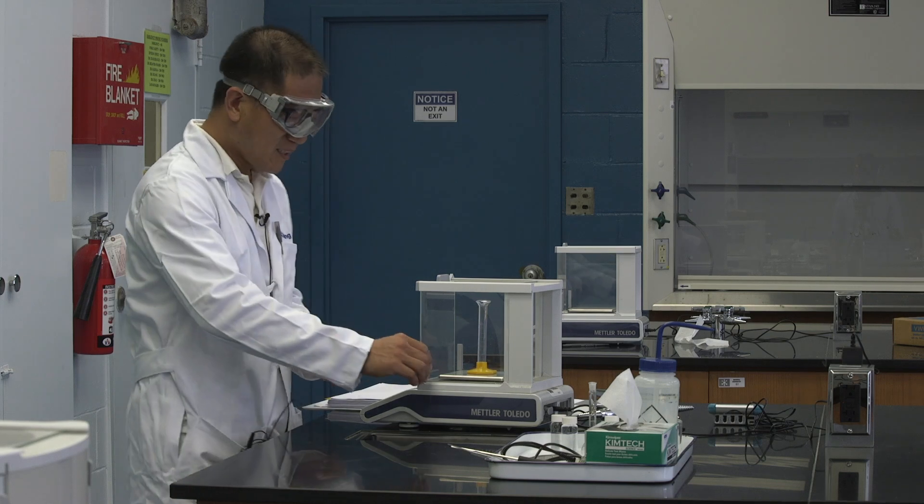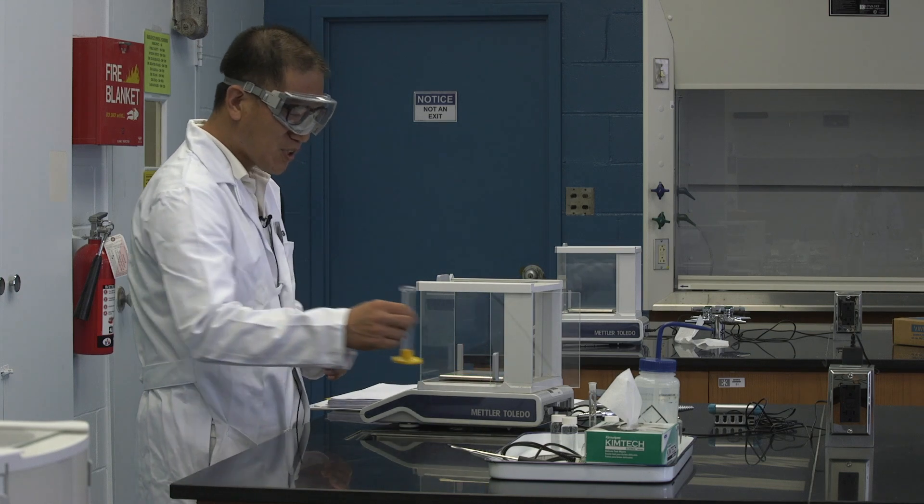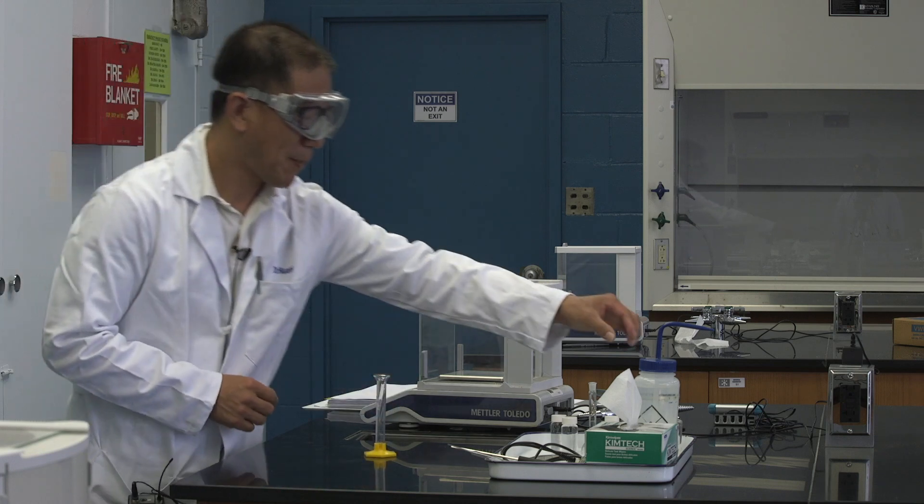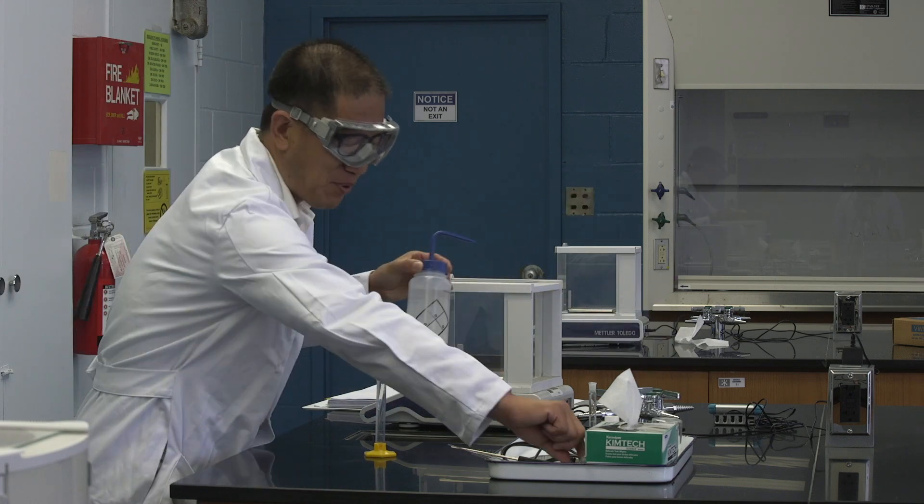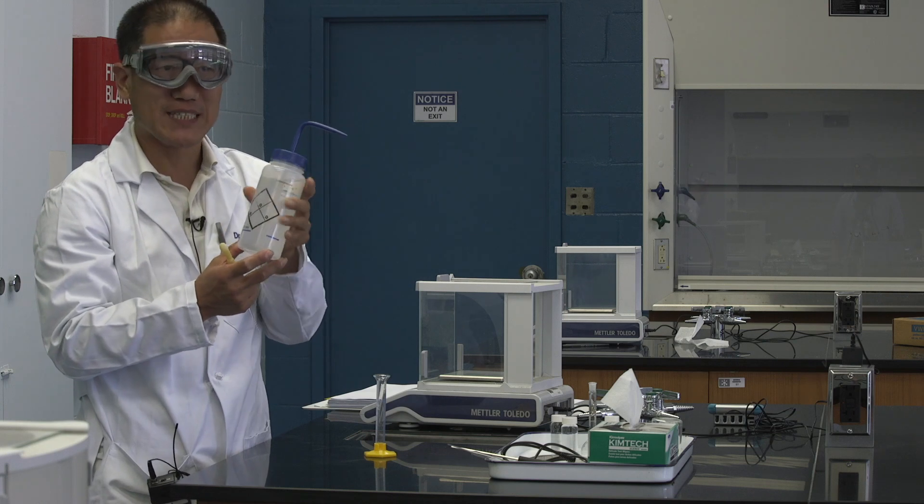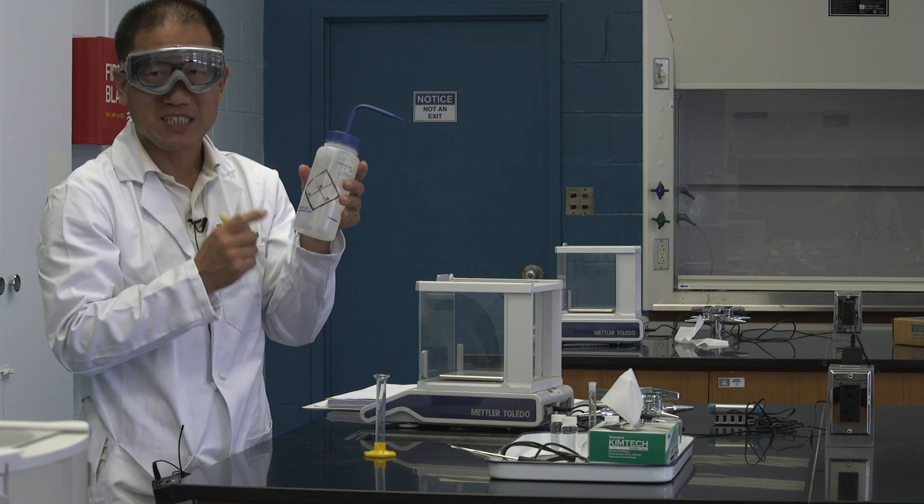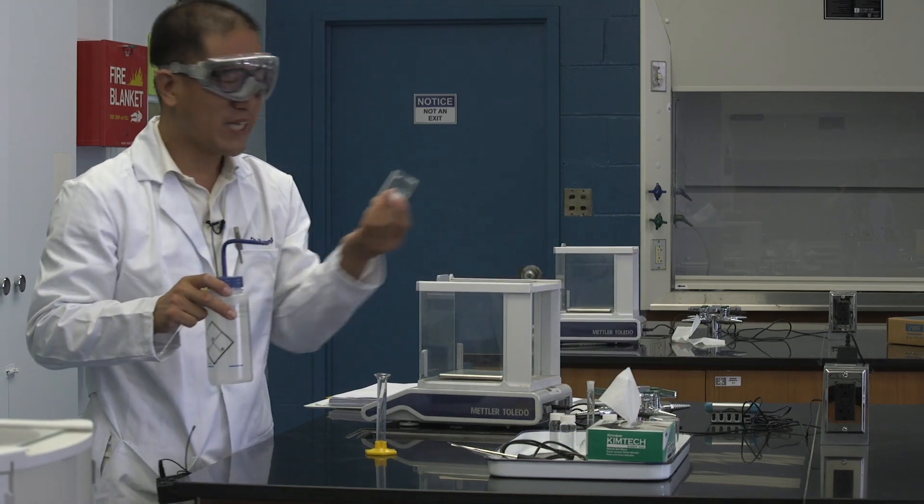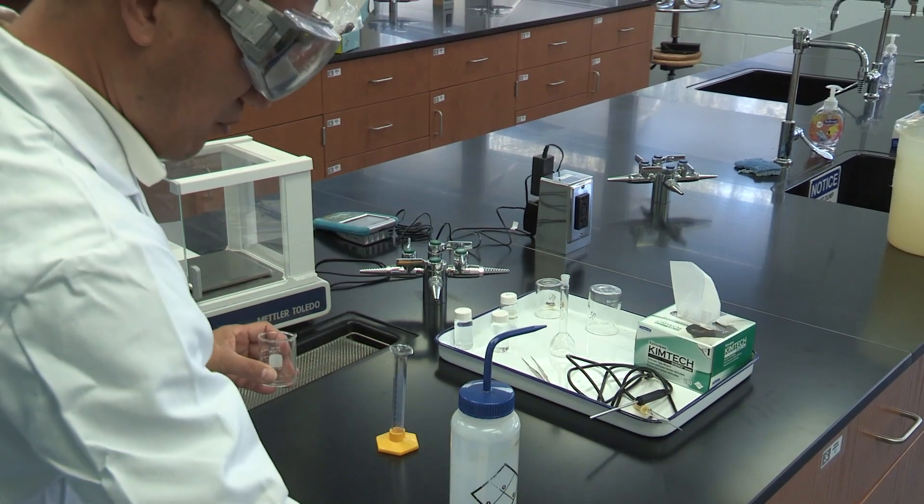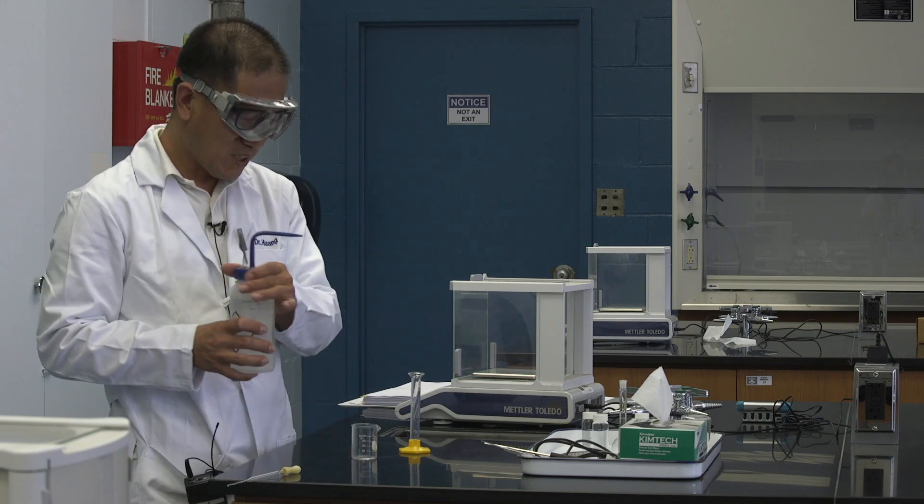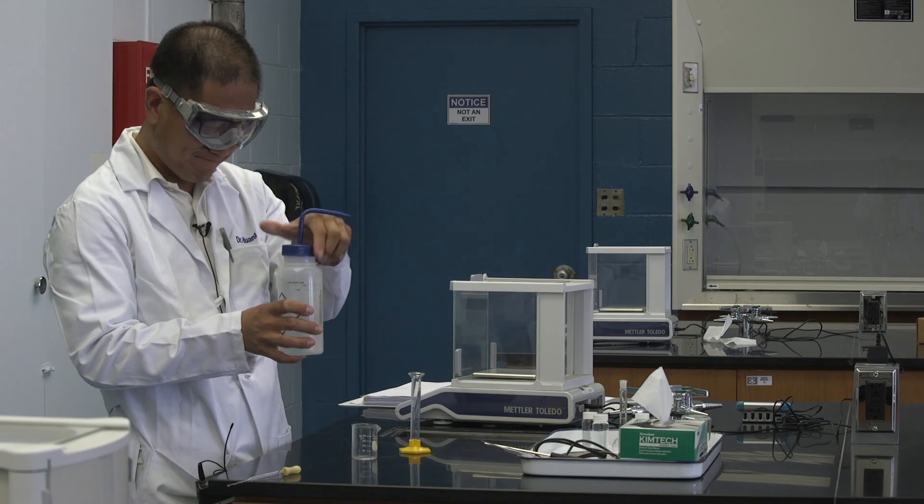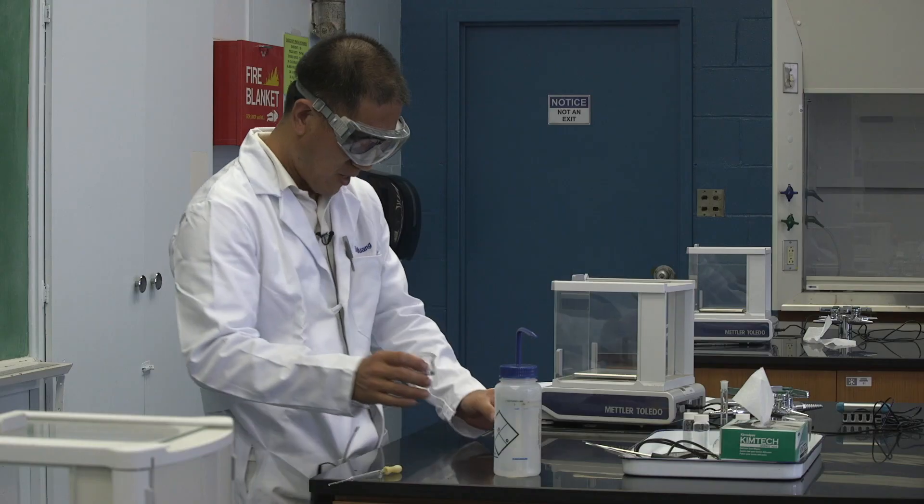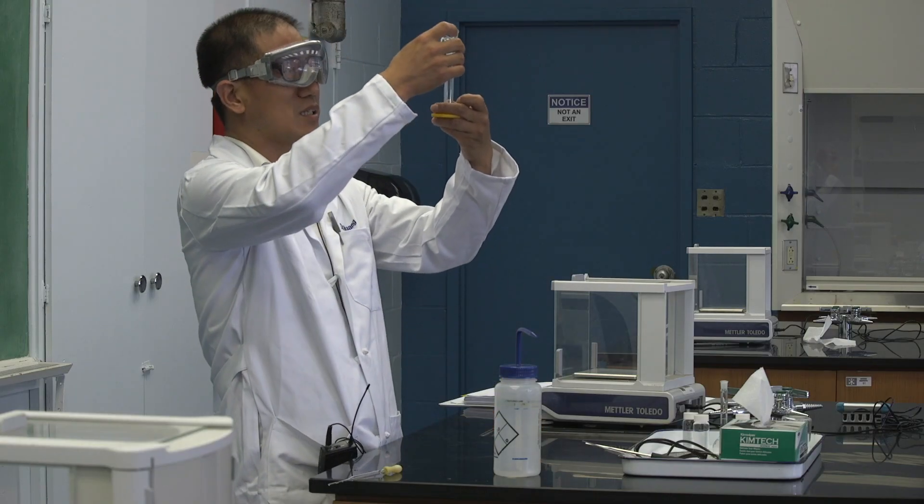Let's take out the graduated cylinder, and we add water to the 2 milliliter mark. We don't want to use the dropper to get water directly from the wash bottle, because if this is dirty, it will contaminate the whole bottle. So we get a beaker. Let's get some water from the wash bottle to the beaker.